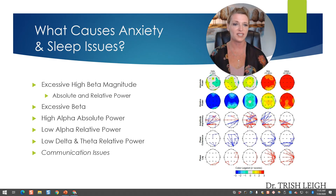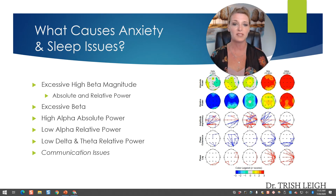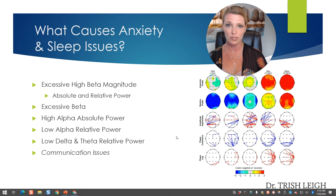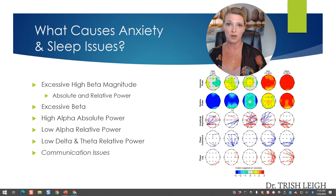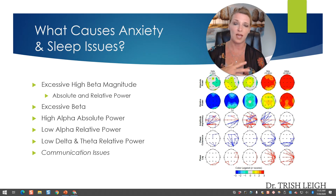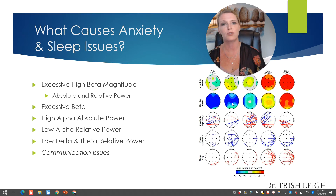Let's break it down. My head's in the way of where it would say theta and alpha here, but these are basically the five main brain speeds. Delta is extra slow brain speed — it is what keeps you in sleep. Theta is slow brain speed; it shifts you into sleep. At nighttime, when you're feeling groggy, theta increases and shifts you into sleep mode. Delta keeps you there.